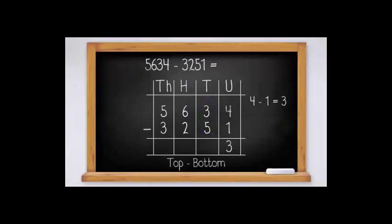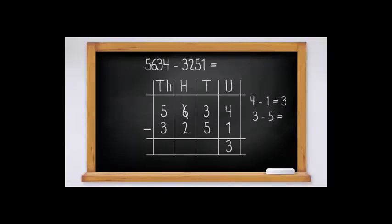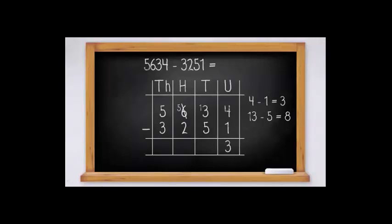Always remember top number minus bottom number. Three minus five is not possible because three is smaller than five, so we have to borrow from the hundreds place. The hundreds digit six becomes five and gives ten to the tens place. Ten plus three is thirteen. Thirteen minus five equals eight. We write eight under the tens column.